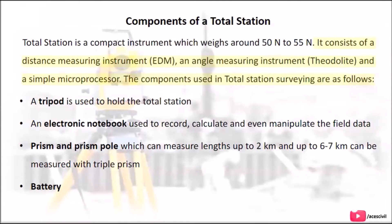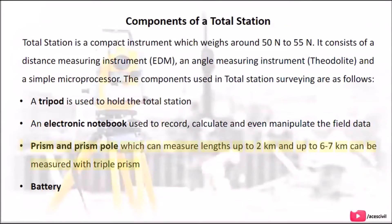The components used in Total Station surveying are as follows: A tripod is used to hold the Total Station. An electronic notebook is used to record, calculate, and manipulate the field data. A prism and prism pole can measure lengths up to 2 km, and up to 6 to 7 km can be measured with a triple prism. A battery is also required.